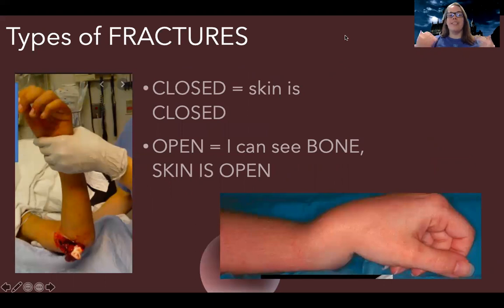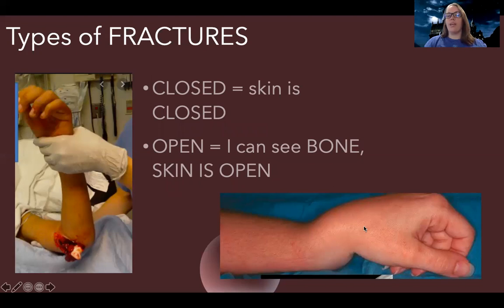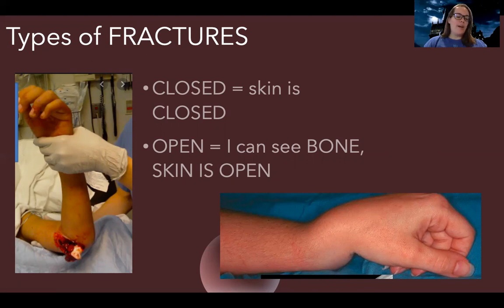So let's first start by talking about types of fractures. There's two types of fractures. There's a closed fracture like this one here at the bottom — it's closed because the skin is not broken. It's very obvious there's a break there, something not working, but the skin is closed. Whereas an open fracture is open where you can actually see the bone, skin is open. We're going to be concerned about the patient's risk of infection and that fracture is obviously going to need some sort of surgery.